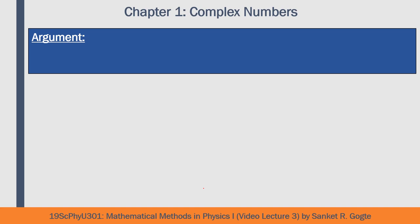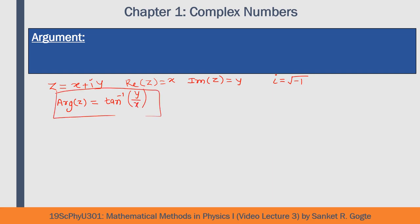The next definition is argument of a complex number. For z equals x plus i*y, with real part x and imaginary part y, the argument of z is defined as tan inverse of y divided by x. To find the argument, you find the ratio of the imaginary part to the real part and take the tan inverse of that ratio.